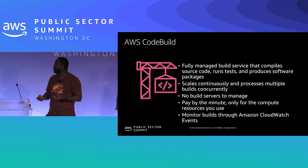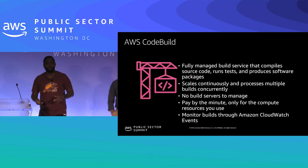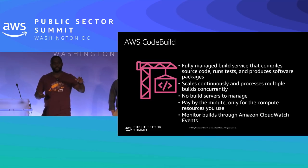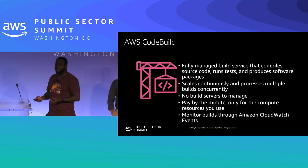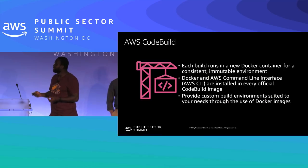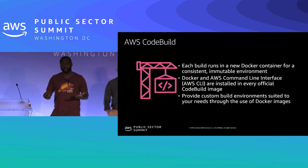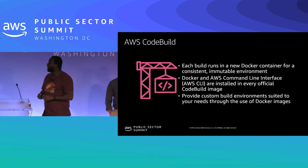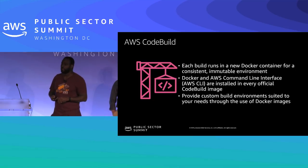With CodeBuild you can scale continuously and process multiple builds concurrently — you no longer have to wait for someone else's build to finish. You pay by the minute, only for compute resources you use, and you can monitor through CloudWatch. Each build runs in a new Docker container, and you can customize the image — for example, using a custom AMI with deep learning libraries. Docker and the AWS CLI are available in the CodeBuild image.